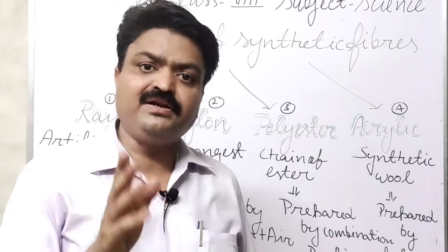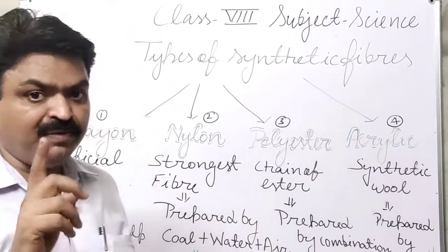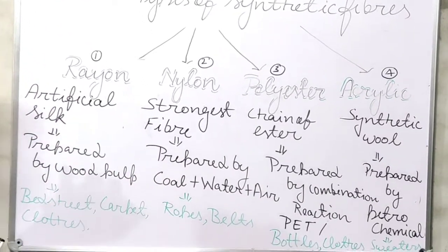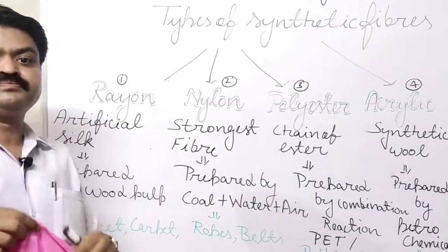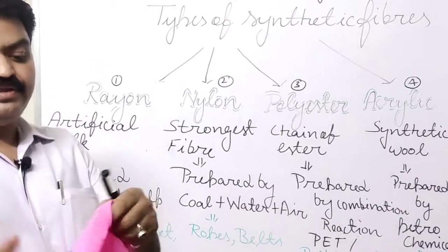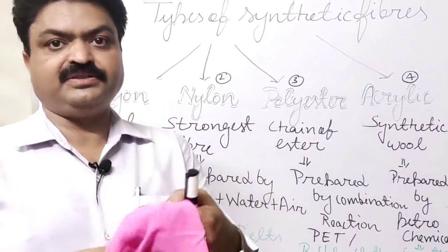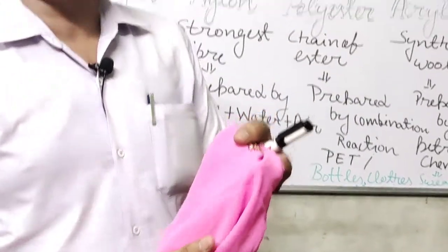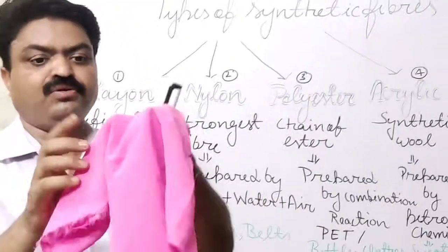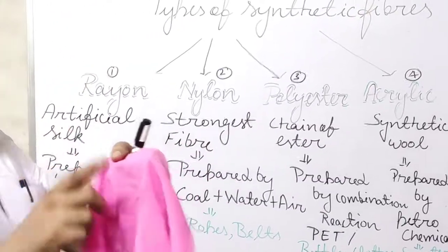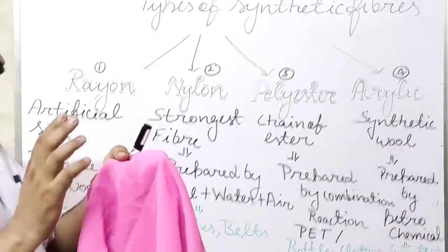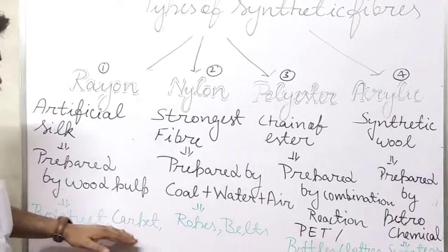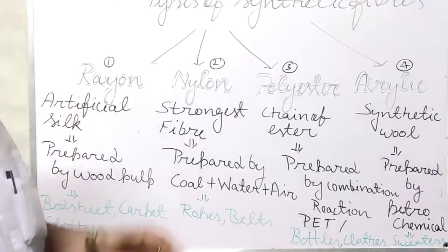Rayon is known as artificial silk because it is similar to silk. If we observe it, it looks like silk cloth. But it is artificial silk because it is prepared from wood pulp. This cloth that looks like silk is made up of rayon — it does not have any natural fiber, only rayon fiber. With this fiber, bed sheets, carpets, and bags are prepared.